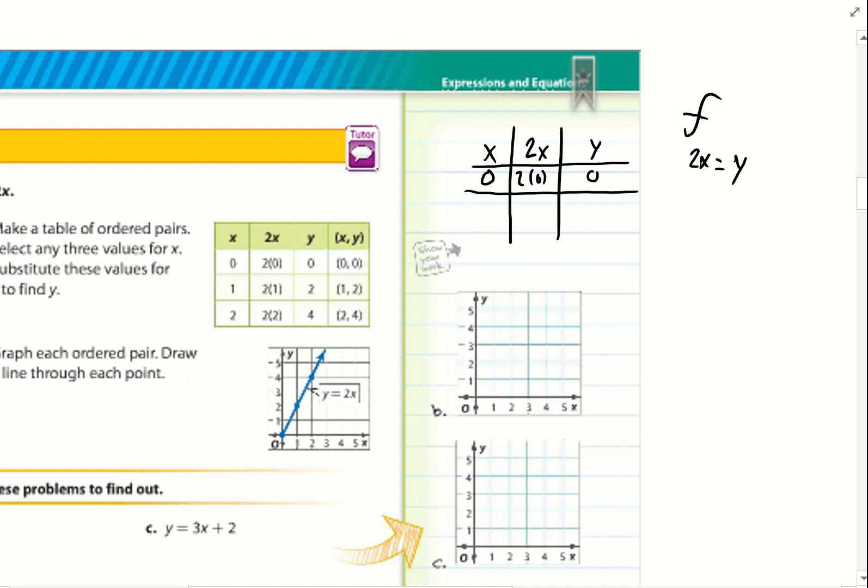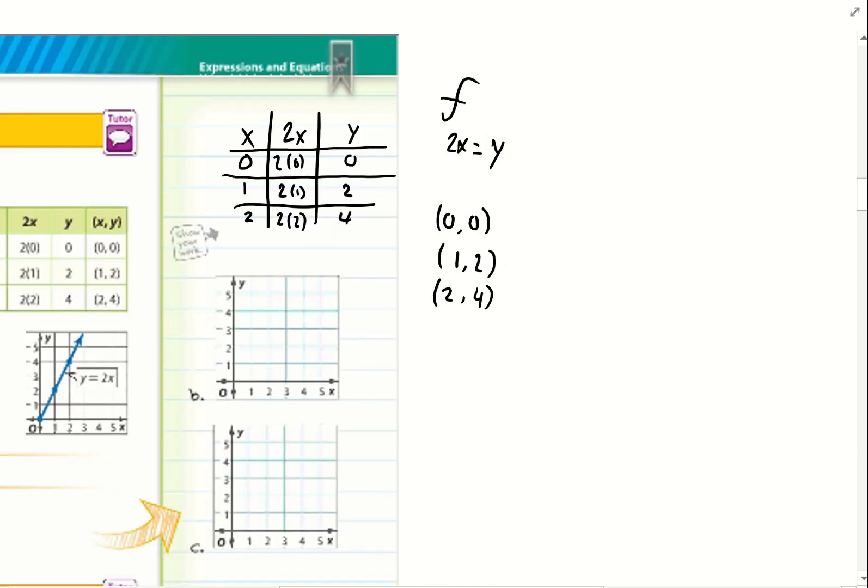This needs to be 2 times 0. So if x is 0, y is 0, so that can be written as an ordered pair. Now if x equals 1, 2 times 1, that equals 2. So my next ordered pair is 1, 2, because that's my x and that's my y. If x equals 2, 2 times 2, y equals 4.